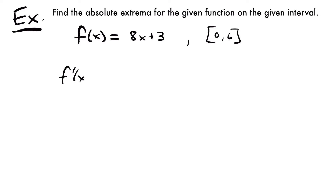We'll have f prime of x is equal to 8, because the derivative of 8x is 8, and the derivative of 3 is zero since it's a constant. This is a little tricky because we can't solve for any values of x now. If we set this equal to zero, we just get a statement that's not true — 0 is not equal to 8 — so this doesn't tell us anything. There are no critical numbers, so we just have to plug in the endpoints.